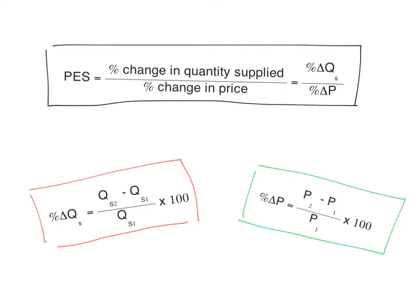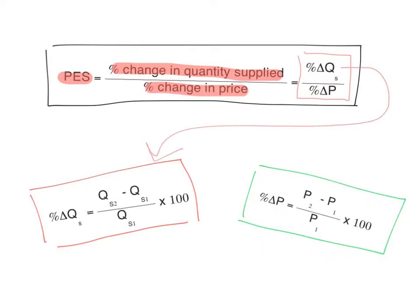Price Elasticity of Supply is calculated using this formula: Price Elasticity of Supply equals percentage change in quantity supplied divided by percentage change in price. The percentage change in quantity supplied is calculated by taking the new quantity supplied (QS2) minus the old quantity supplied (QS1), divided by QS1, times 100. The percentage change in price is calculated by taking the new price (P2) minus the old price (P1), divided by P1, times 100.